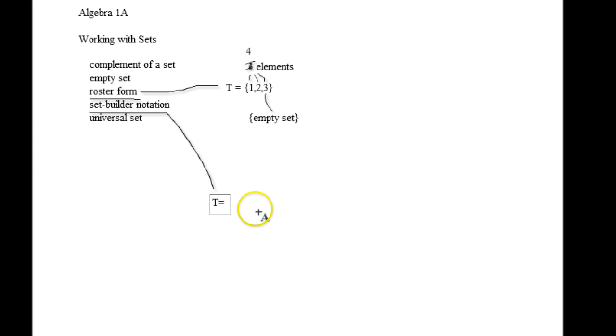You still have the same thing. Let's say we have set T, but in this case, you say the variable first, and then you say the absolute value line next. Let's say X is an even number less than 16.